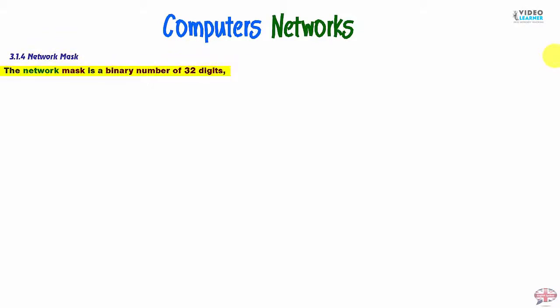The Network Mask is a binary number of 32 digits, each digit is a bit. Here it is, the mask which comes with an IP address.